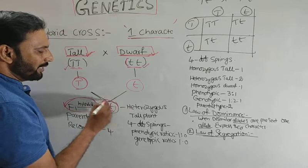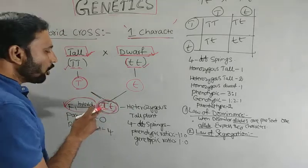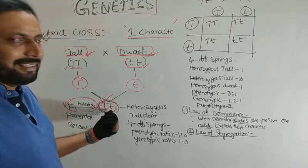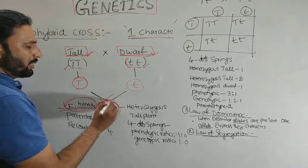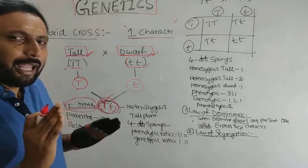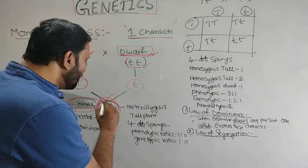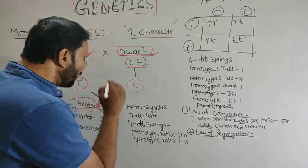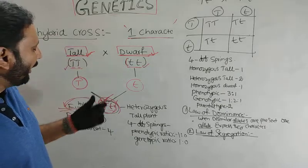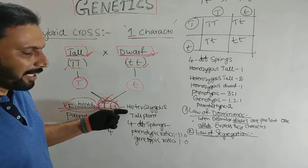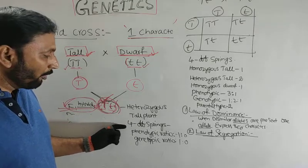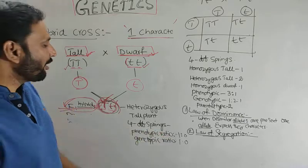When we made a cross between these two gametes, the F1 hybrid is capital T, small t. It is not homozygous — it is heterozygous, which contains dissimilar alleles, capital T and small t. The F1 hybrid, capital Tt, looks like a tall plant. Phenotypically it is a tall plant, but genotypically it contains both tall character and dwarf character. There is no homozygous tall and homozygous dwarf in F1 generation, so these plants are heterozygous. All four offsprings are phenotypically tall; the phenotypic ratio is 1:0 — all are tall, not dwarf.